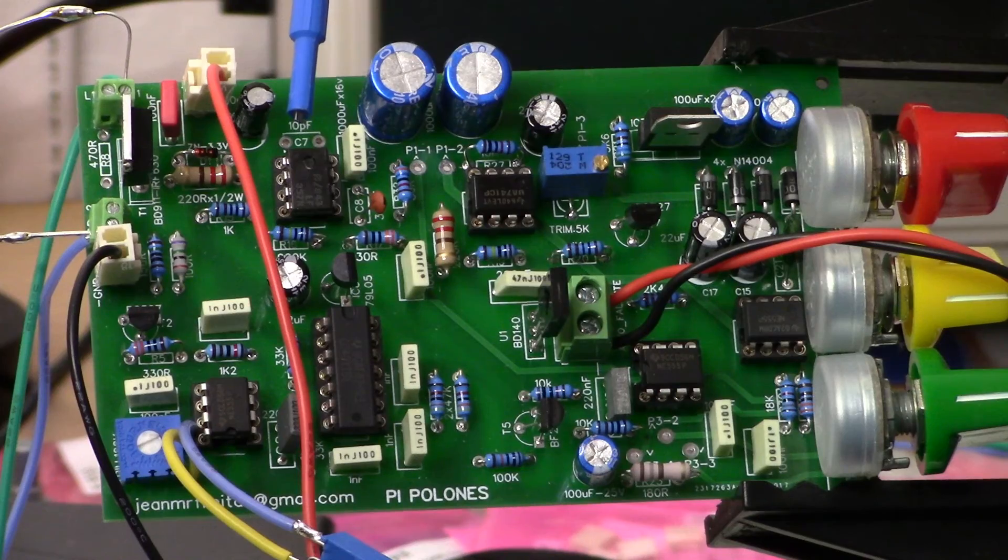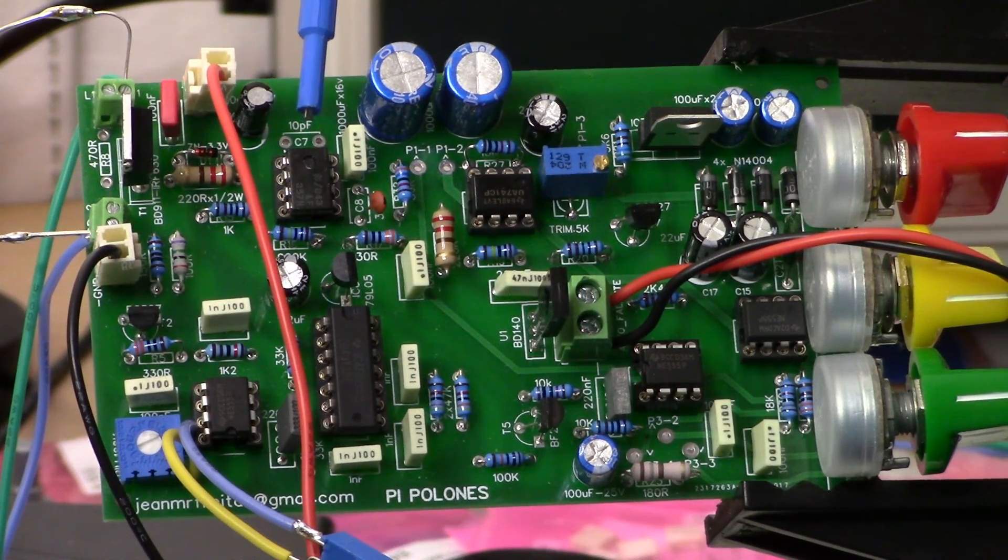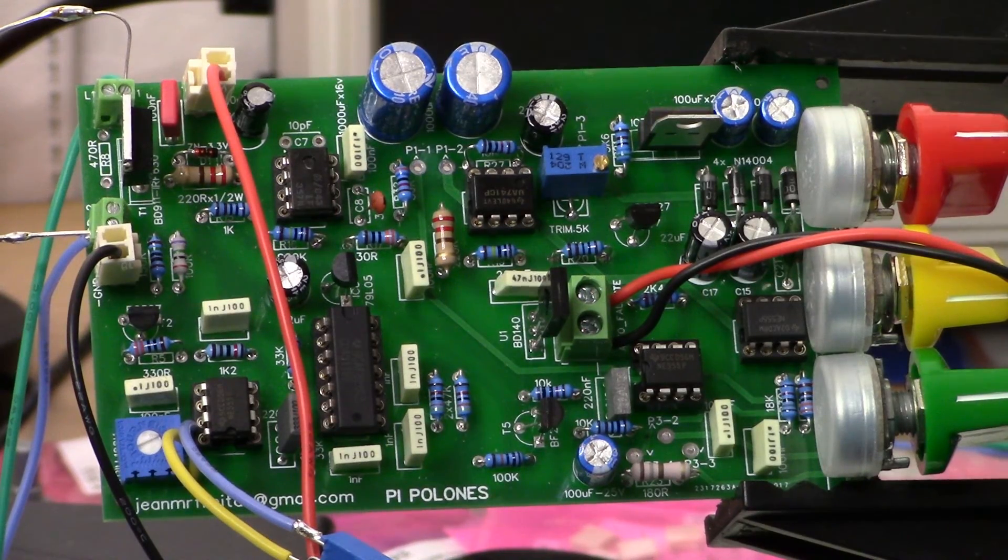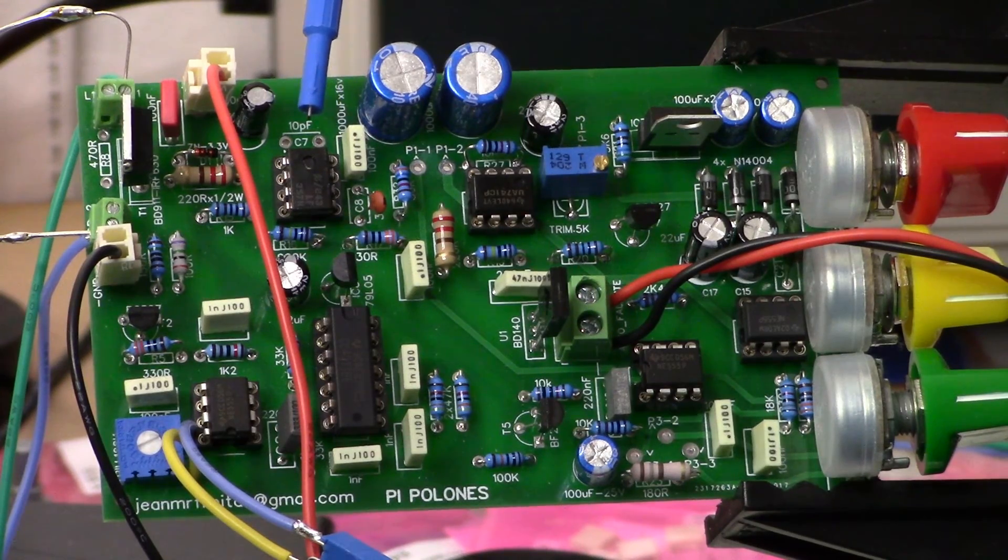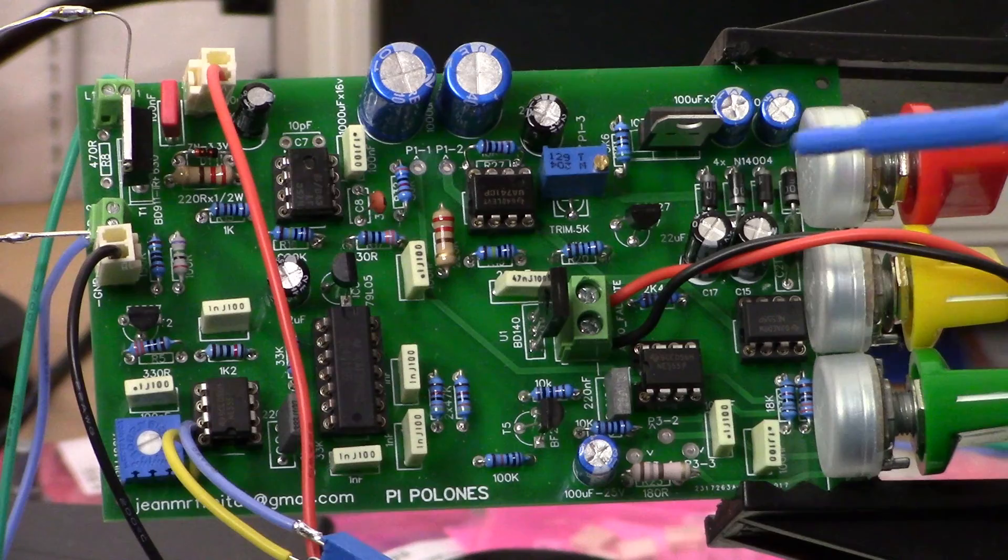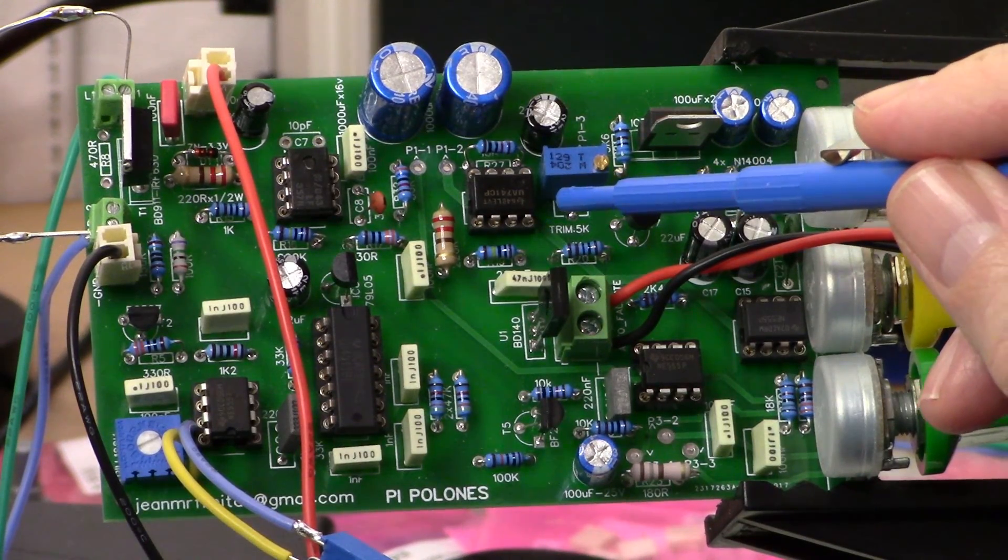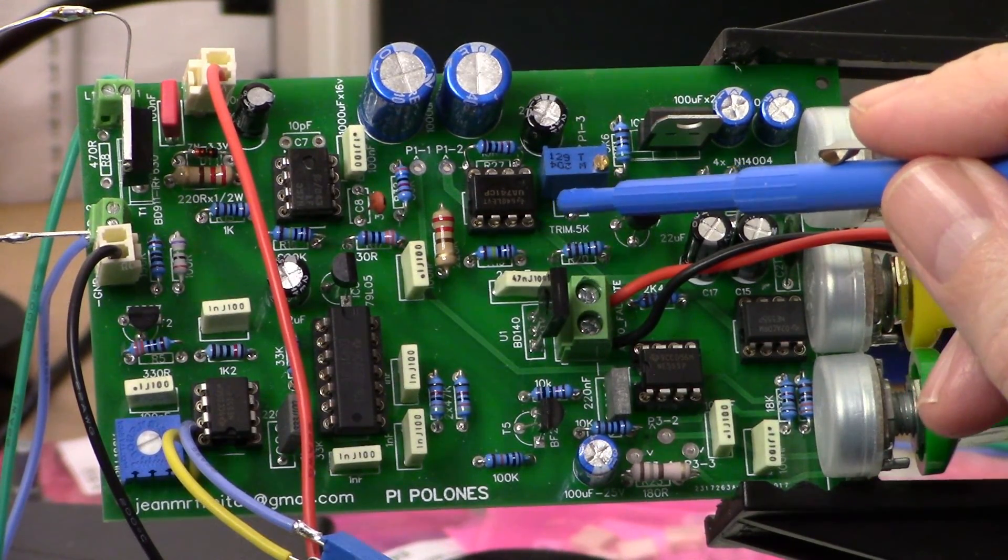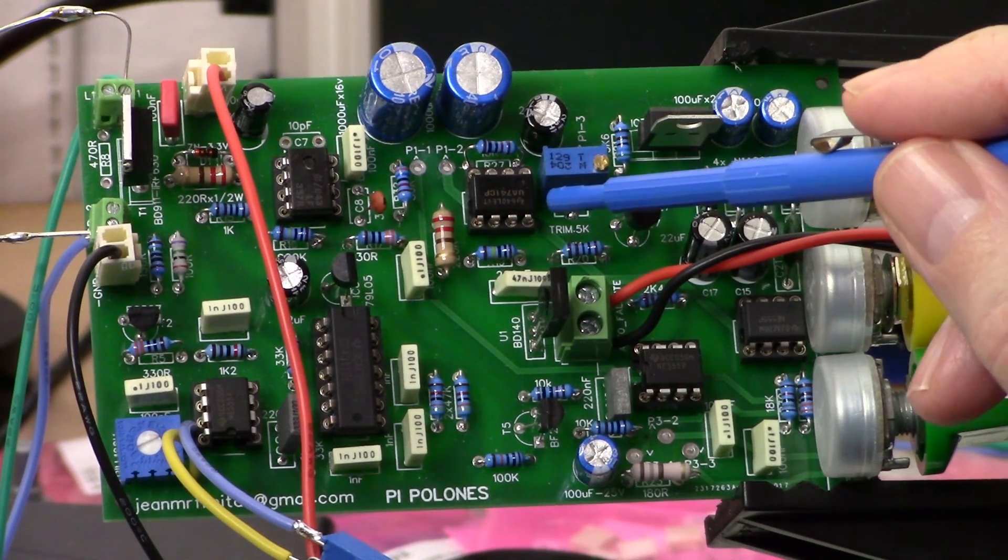You could try other things in there. I don't know if you're going to be able to match the gain of this, though. The UA 741 here, I think you might be able to change that out as well. This is a pretty generic integrated circuit.